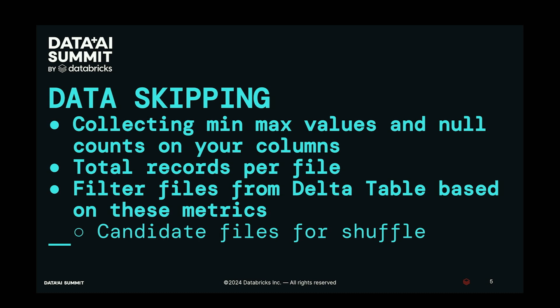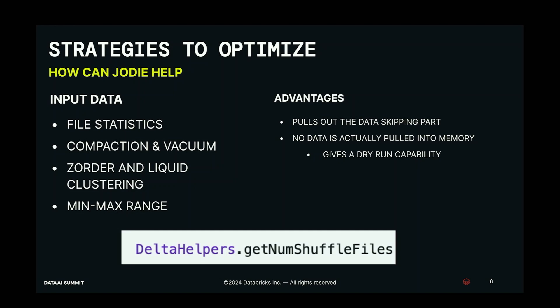A lot of optimizations target data skipping. Even before you join, the number of files pulled into memory — the number of files that become candidates for the join — determines the amount of shuffle that happens. Data skipping collects min, max values and null counts on your columns and total records per file. The files are filtered from your Delta table based on these metrics, and these are the files passed into your shuffle. If you can optimize at this level, there is something to be gained, and that's where Jodie can help you.